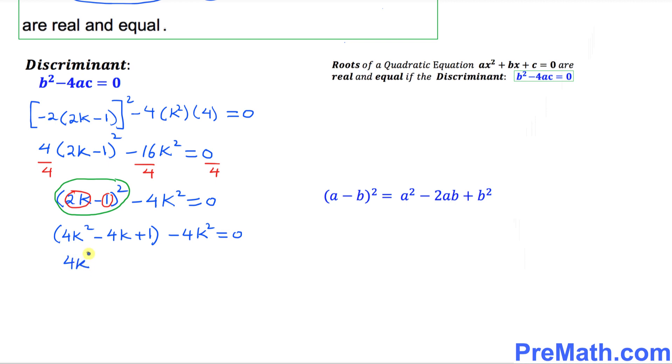We have 4k² - 4k + 1 - 4k² = 0. And we can see that over here, this is 4k² and negative 4k². They cancel out.